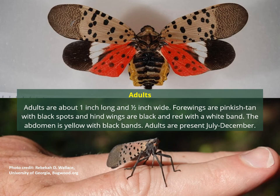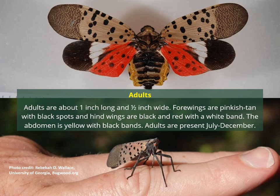As adults, this species is quite large — about an inch long and with their wings closed a half an inch wide. With their wings spread open like in the top photo, people think they look like a moth or butterfly, but they're truly a plant hopper. Usually you will see them resting with their wings tented back. The forewings are pinkish tan with black spots more concentrated towards the tips, and the hind wings are black and red with a white band. With wings spread, the abdomen is yellow with black bands. As adults, the species is present from July to December, and they will fly as well as jump.